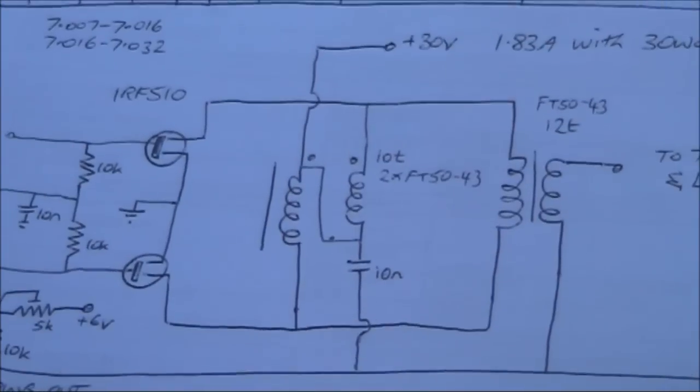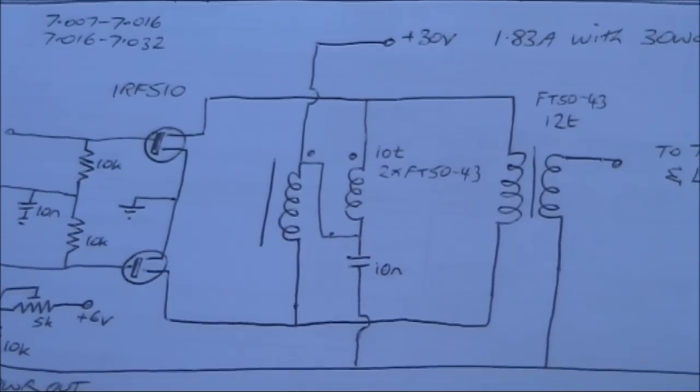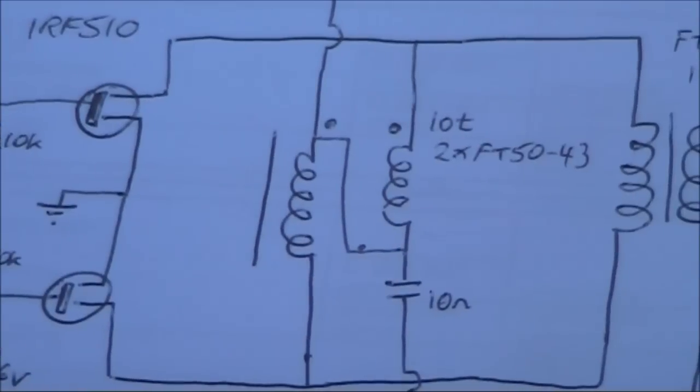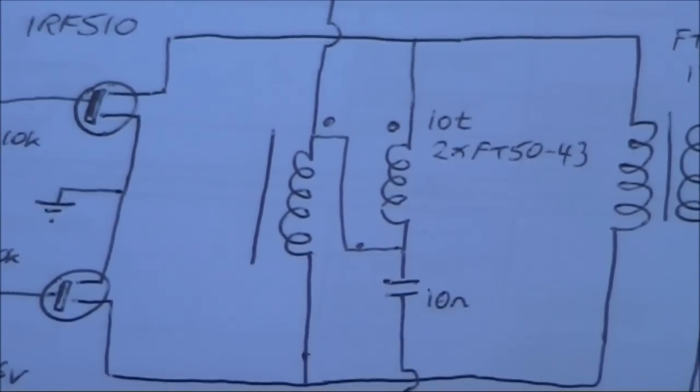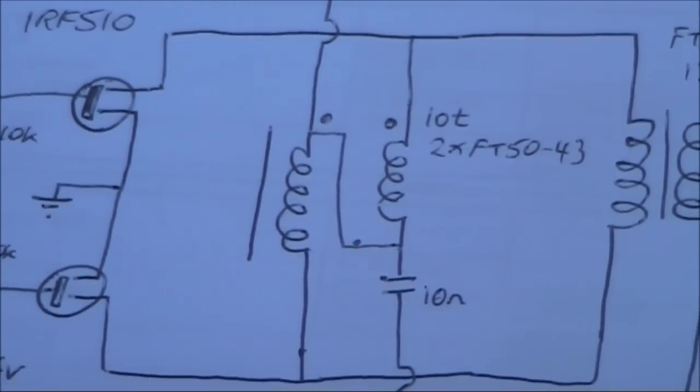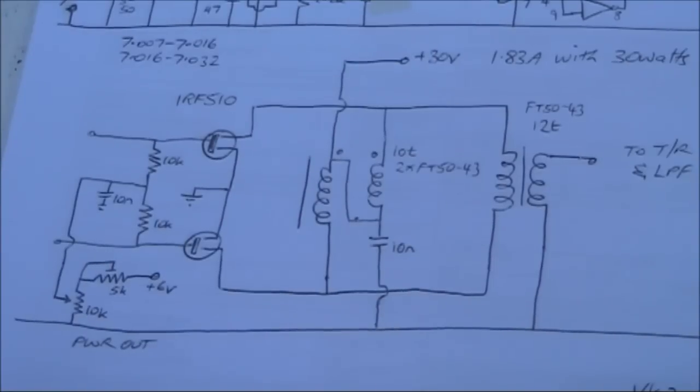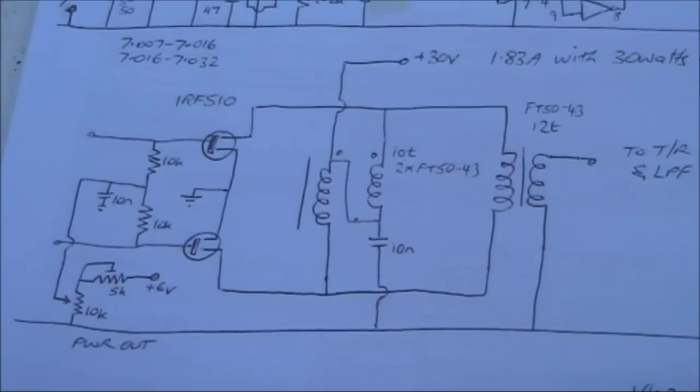And that goes to two toroidal coils. The first one there is actually two FT50-43s. The windings are bifilar wound. And the tapping point is your power supply rail, but in this case, 30 volts.